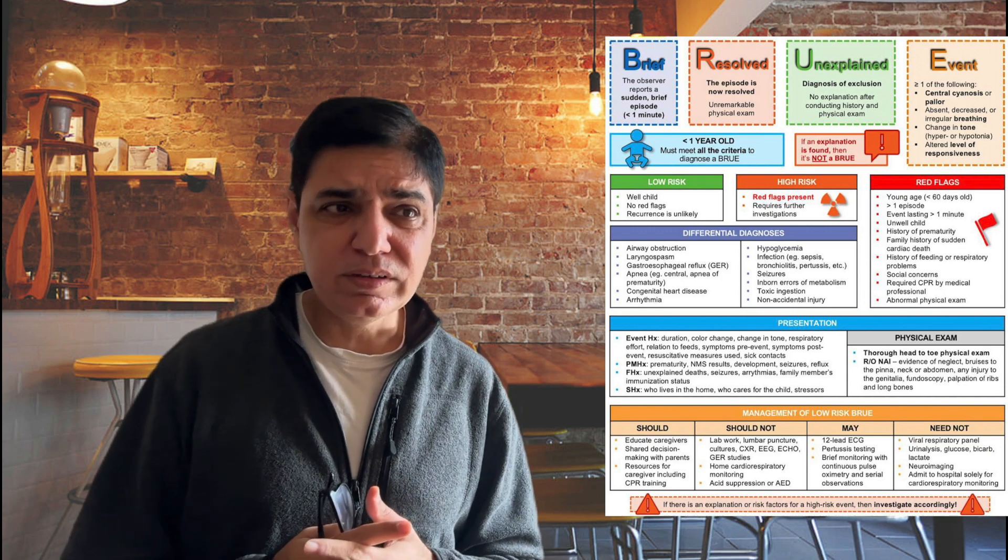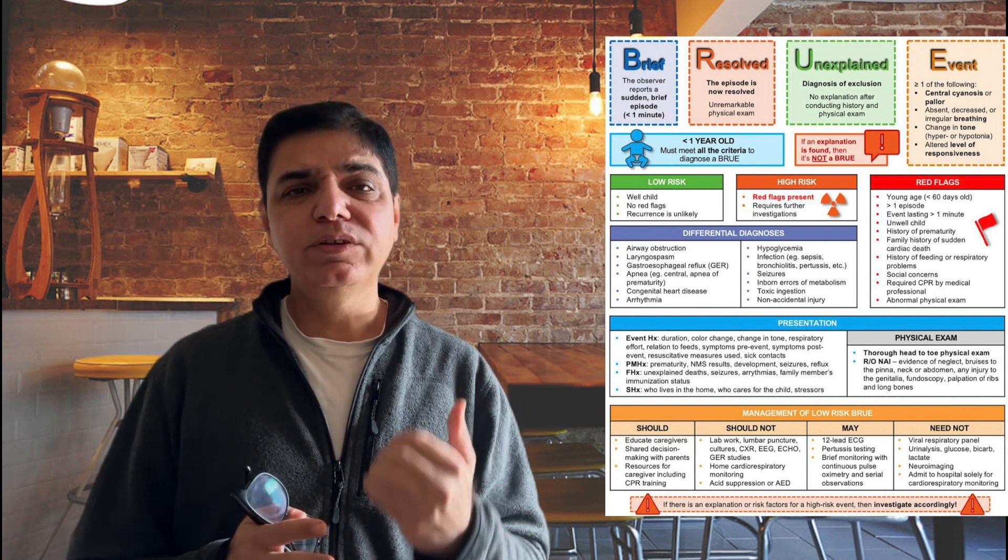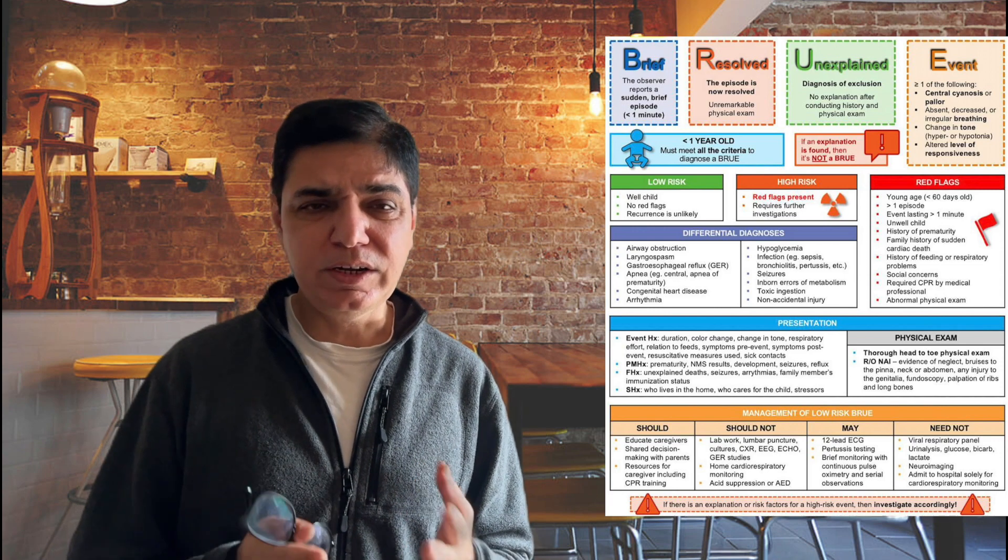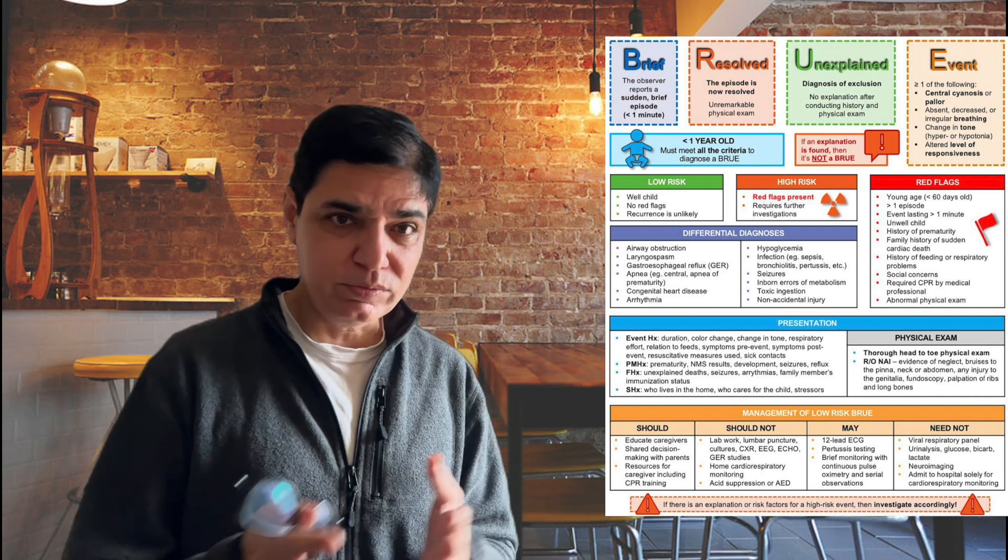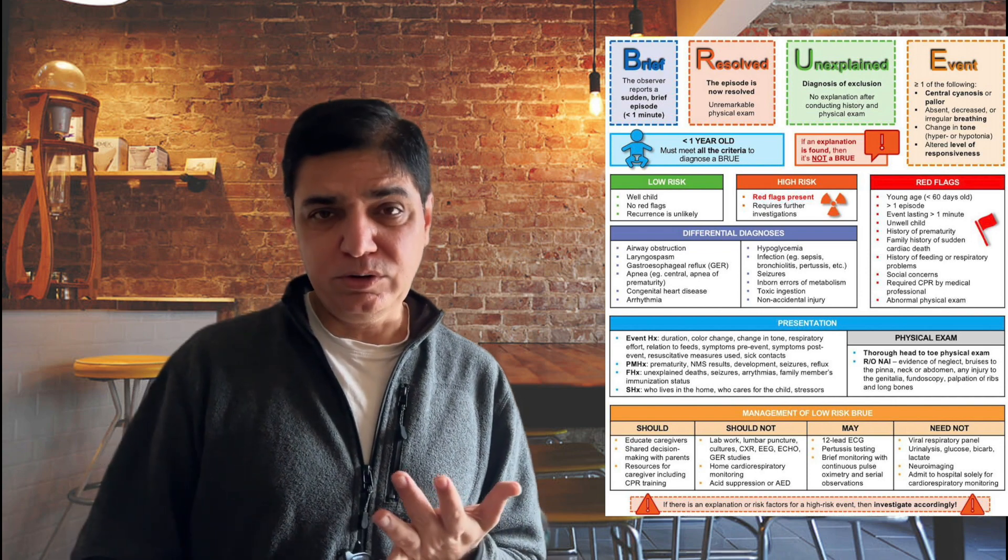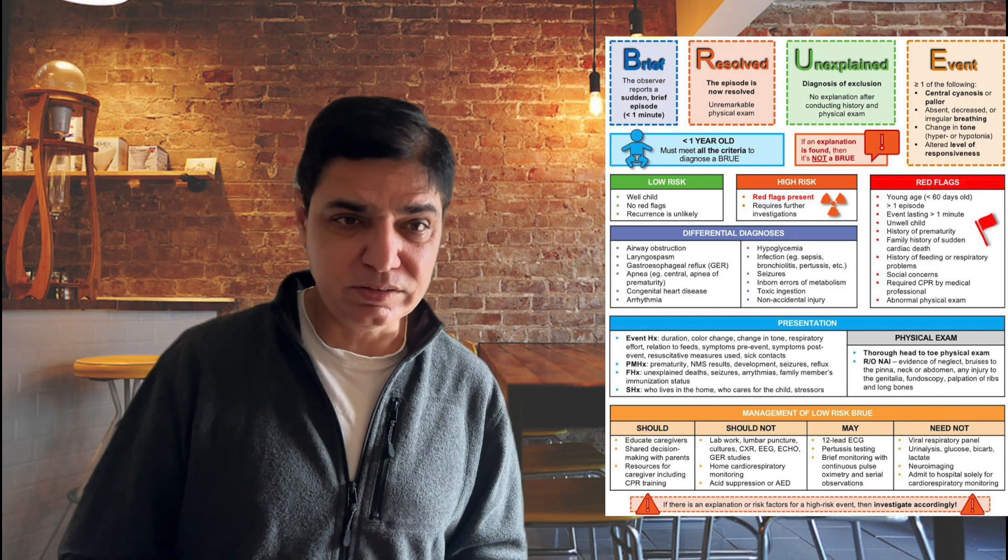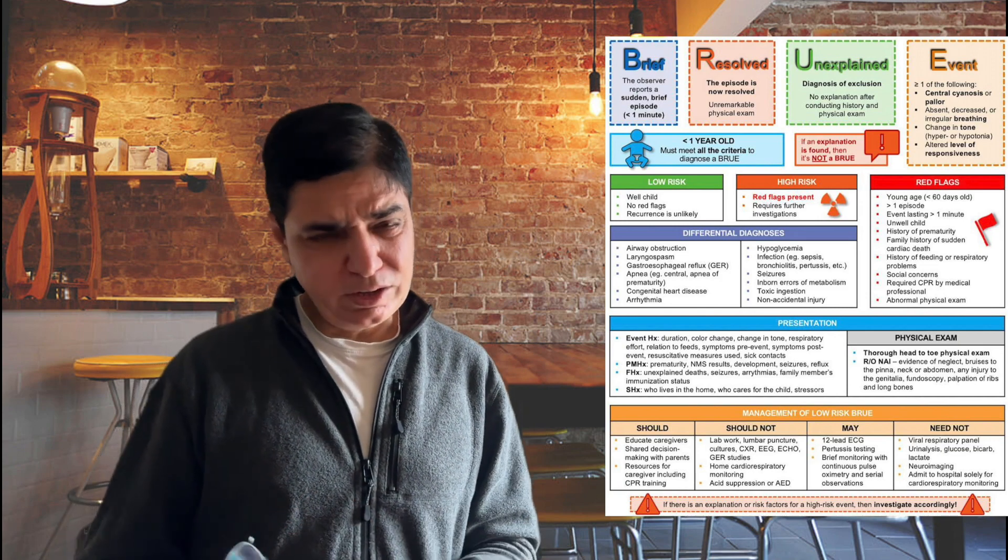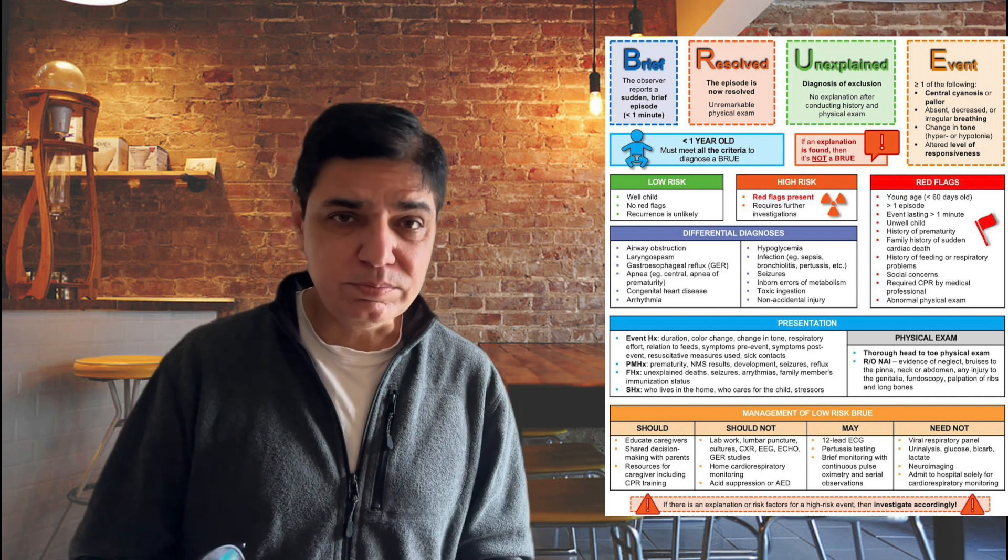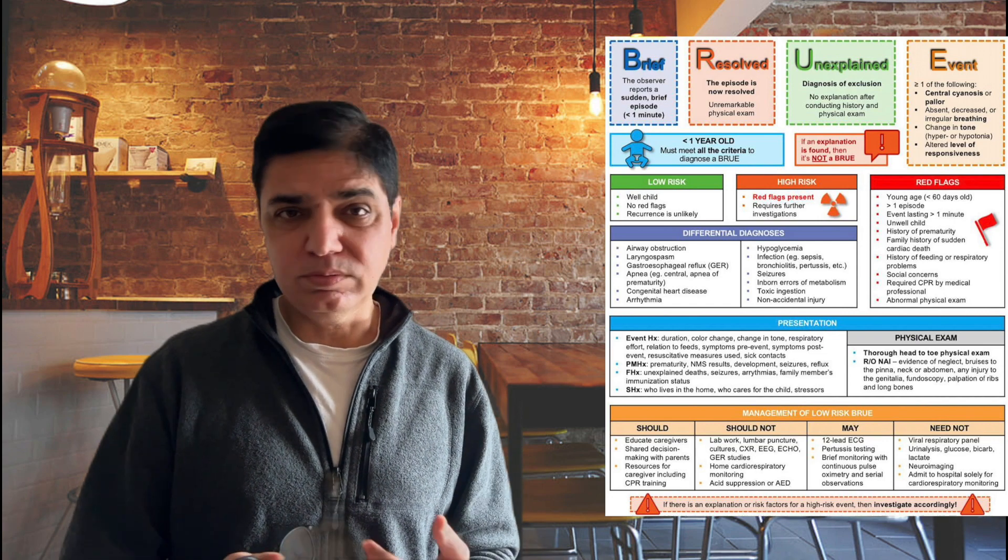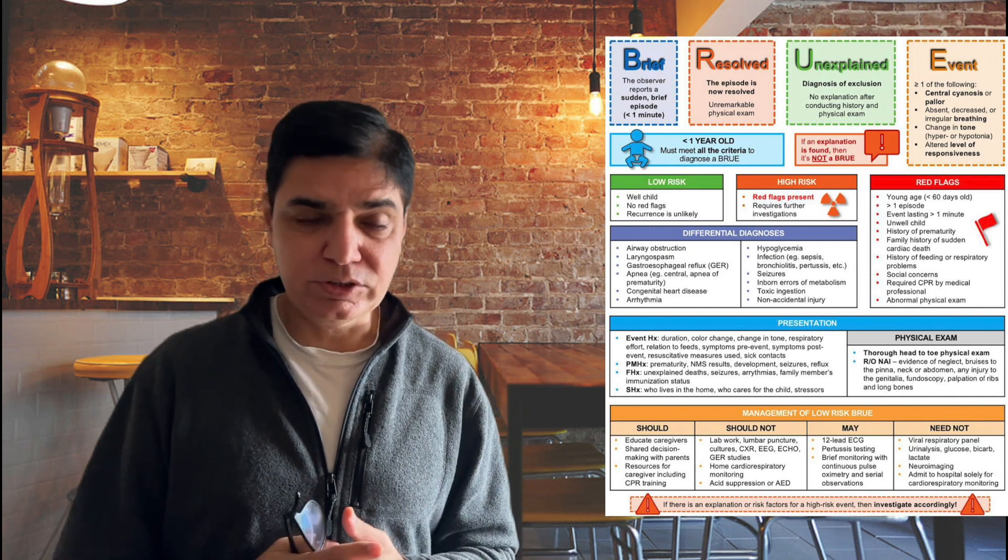Now there are a few things that are on the differential diagnosis of BRUE because when we say BRUE, it's a briefly resolved unexplained event. So usually you don't get any explanation for that. But if there's an underlying explanation or if there is a cause for them, then it's not BRUE. It's one of those differential diagnoses. So remember, it could be airway obstruction because of secretions, it might be laryngospasm, because maybe the child has aspirated something, it's gone into his airways, or it could be gastroesophageal reflux, which again is quite common in babies, or it might be apnea of prematurity. So maybe who has been premature and because of prematurity they can have apnea as well. So that is also a differential diagnosis for BRUE.